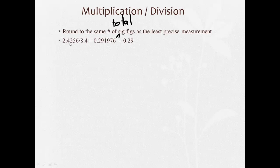So here, if we have 2.4256 divided by 8.4, well, 2.4256 has 1, 2, 3, 4, 5 significant figures. 8.4 has two significant figures.